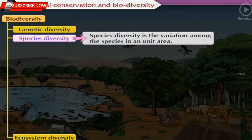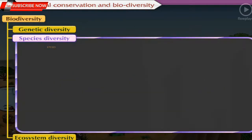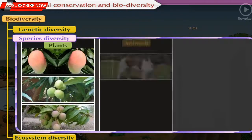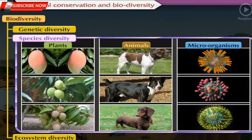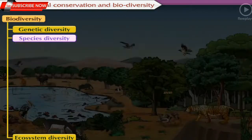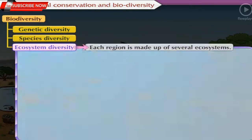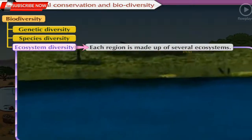Species diversity is the variation among the species in a unit area. It includes different types of plants, animals, microorganisms, etc. Ecosystem diversity: each region is made up of several ecosystems.